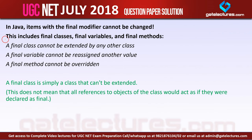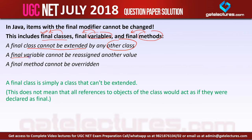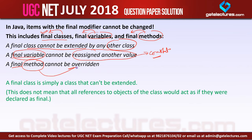So what does the final keyword do? We can use the final keyword with a class, with a variable, and with a method. When we use the final keyword with a class, it means the class cannot be extended by any other class. If we use the final keyword with a variable, the variable cannot be reassigned another value — it becomes something like a constant, its value cannot be changed. And if we use the final keyword with a method, that means the method cannot be overridden. So a final class is simply a class that cannot be extended.